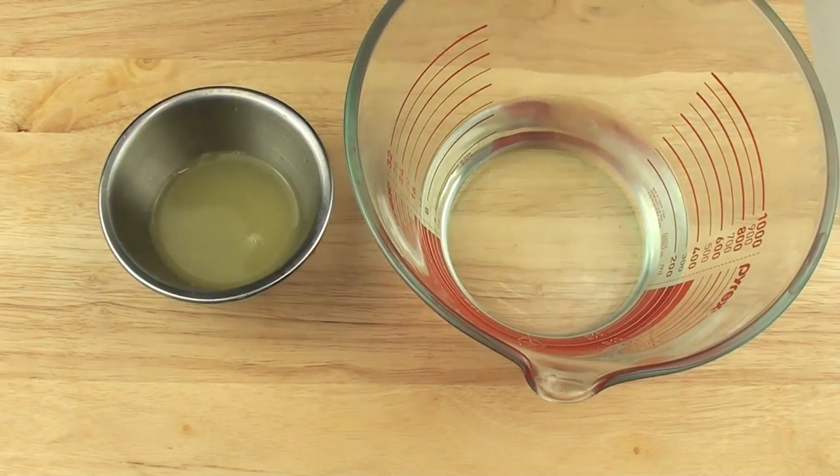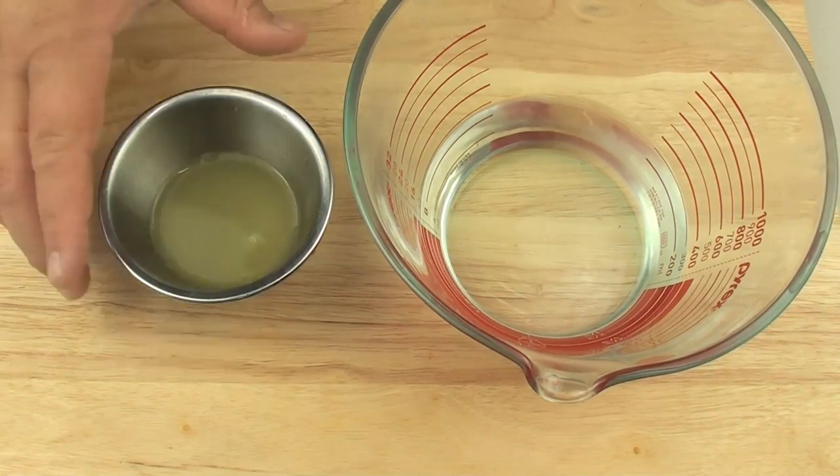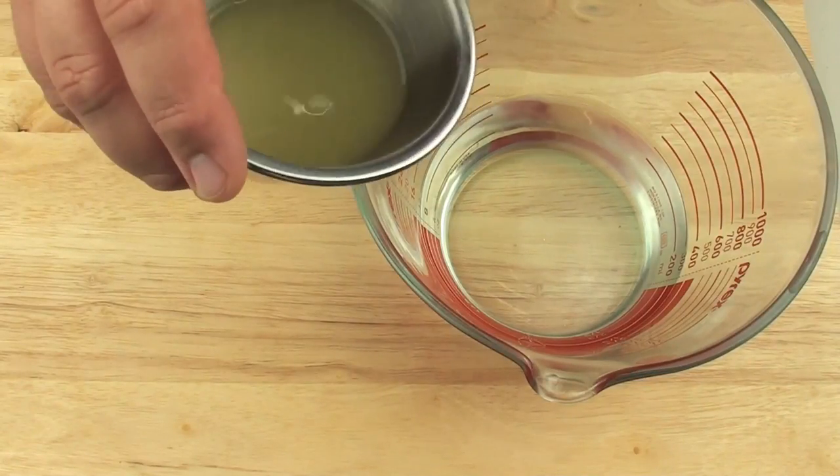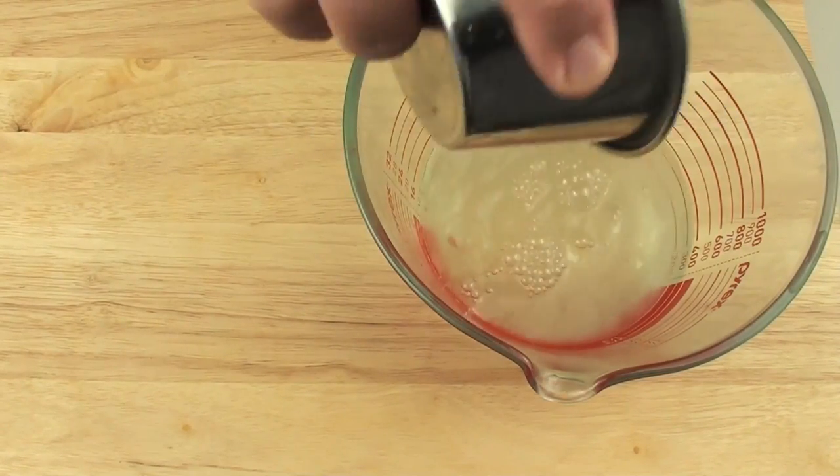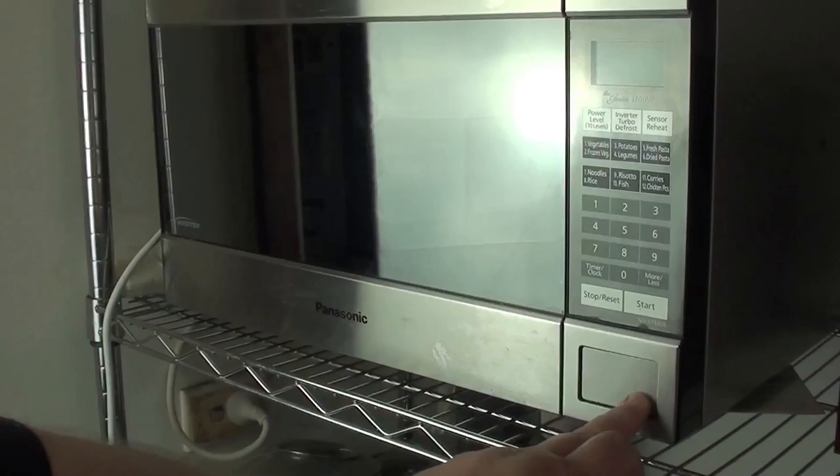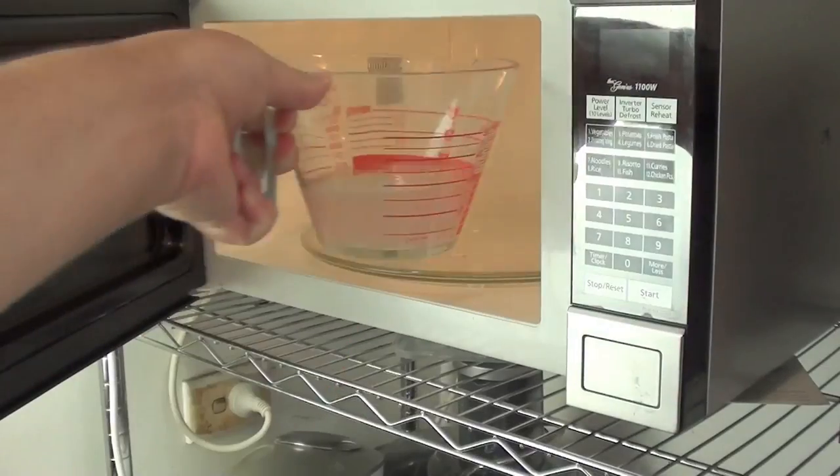Into a microwave-safe bowl, I've got one cup or 300ml of water, and to that I'm going to pour in the juice of half a lemon, freshly squeezed of course.